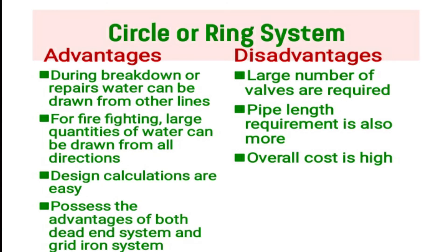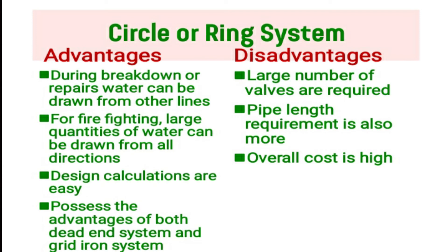Advantages of the circle or ring system: during breakdown or repair, water can be drawn from other lines in several directions. Disadvantages: a large number of valves are required, a ring system requires more infrastructure, and pipe length requirements are also more.